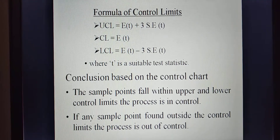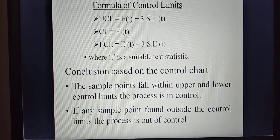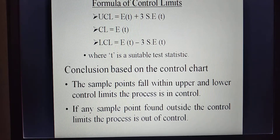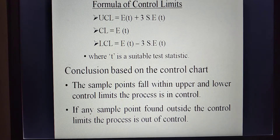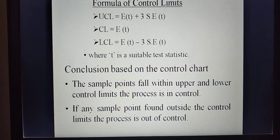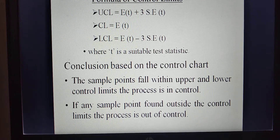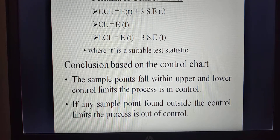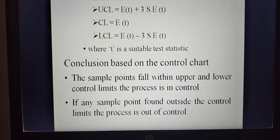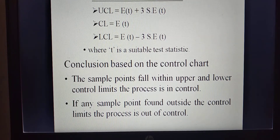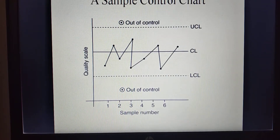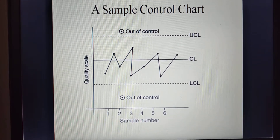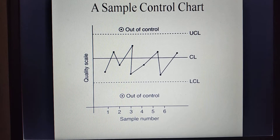Conclusions based on control charts: if all the sample points fall within the upper and lower control limits, then the process is said to be under control. And the second conclusion — if any one of the sample points is found outside the control limits, the process is said to be out of statistical quality control. Now we move on to the example — we consider a sample control chart and discuss.